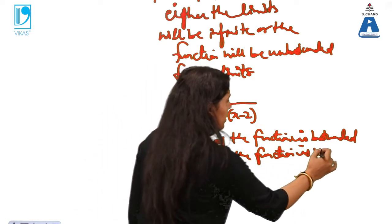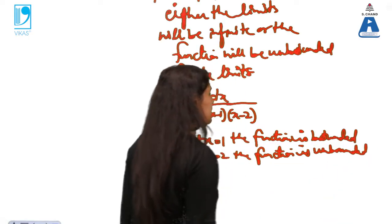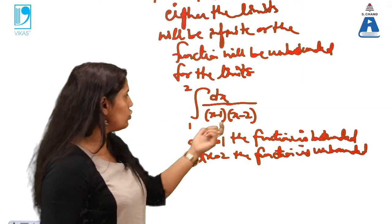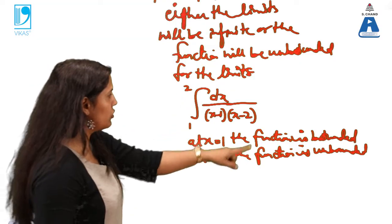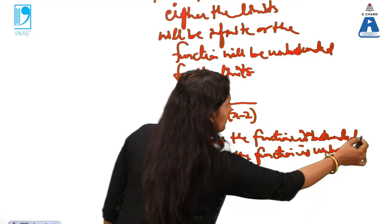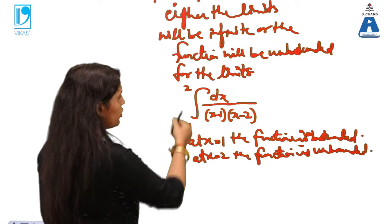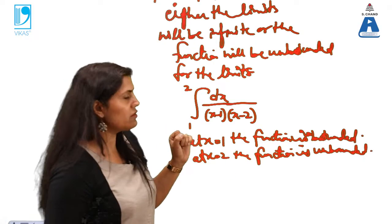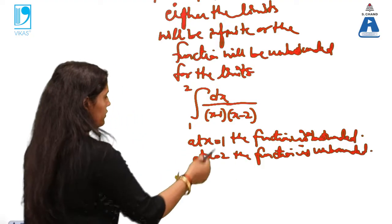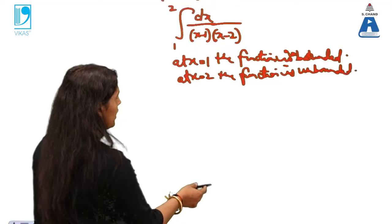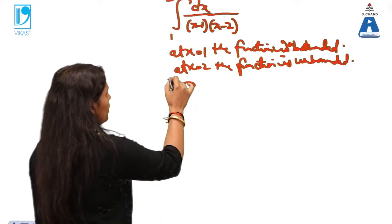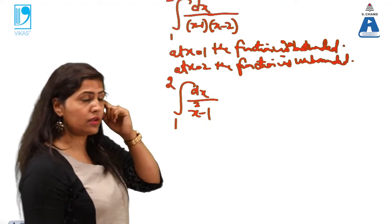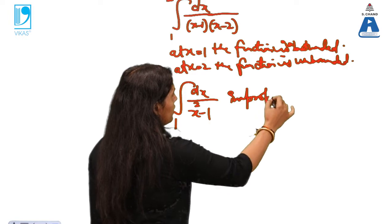Unbounded means the value is infinite — substituting x = 1 or x = 2 gives 1/0, which is infinite. It is not necessary that both endpoints create a problem; it could be just one point. For example, in ∫ from 1 to 2 of 1/(x−1) dx, only x = 1 creates a problem, but it is still an improper integral.